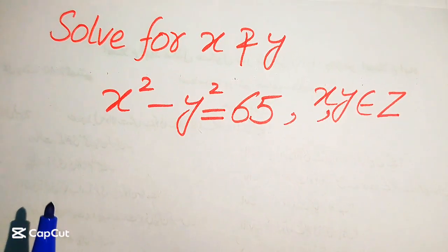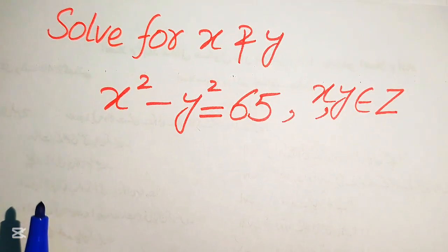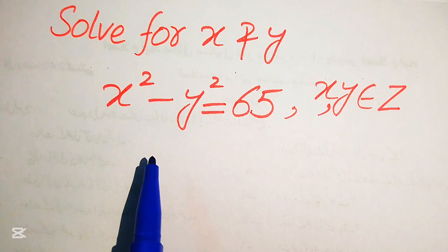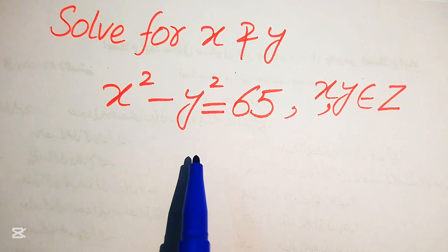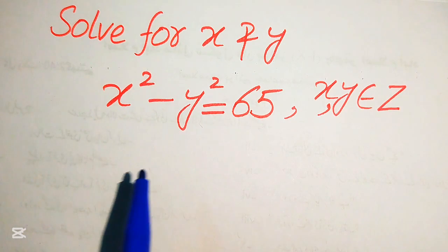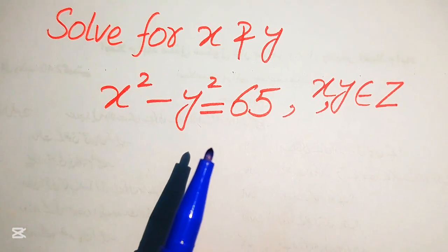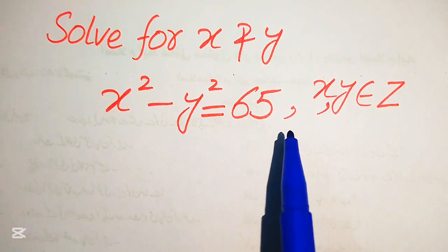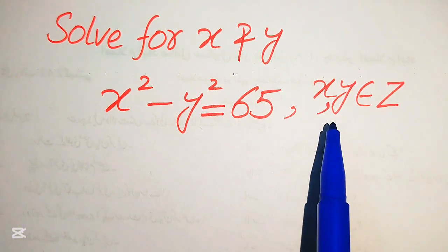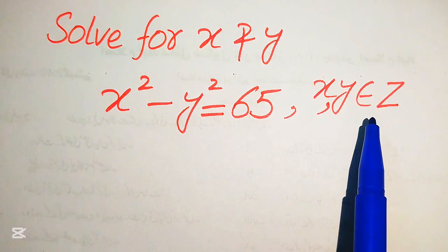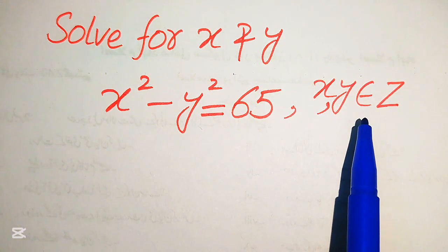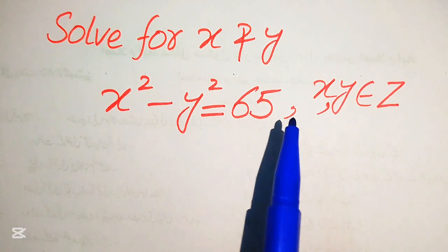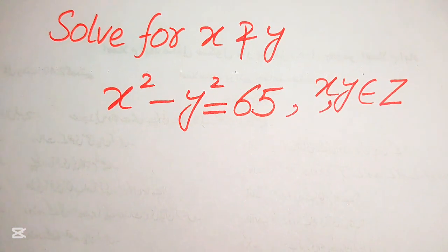Hello everyone, welcome to solve this nice math algebra problem. Here we have x squared minus y squared equals 65 and we solve this problem for the values of x and y, where x and y must be integers. So it means that we solve this problem for integer values of x and y.